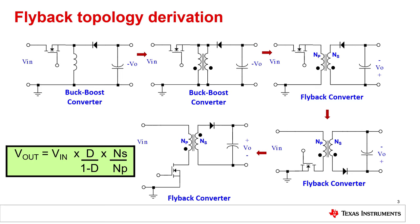If we now have a look on the VIN to VOUT relationship, the difference to the inverting buck-boost topology is coming from the turns ratio of the transformer. With this, we can achieve wide voltage ranges as well as isolation between the input and output voltage.